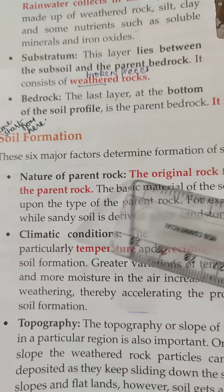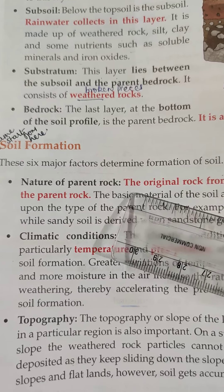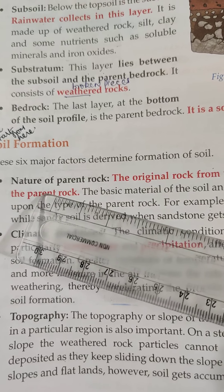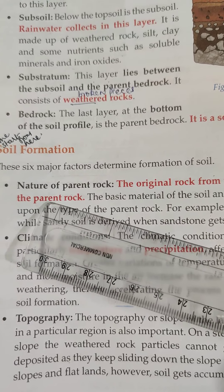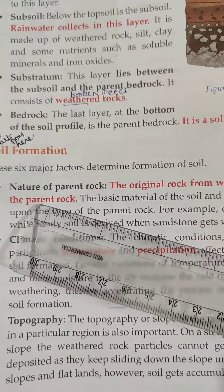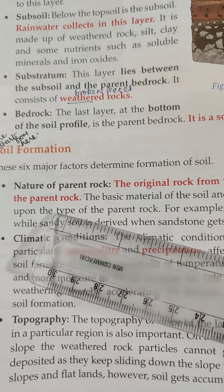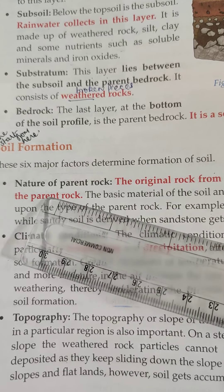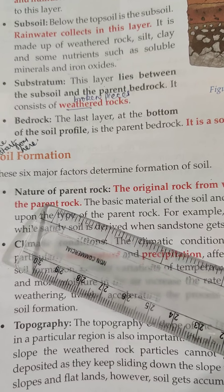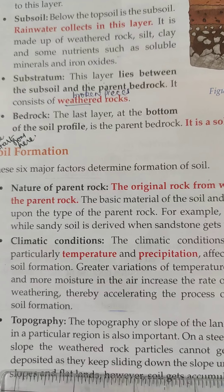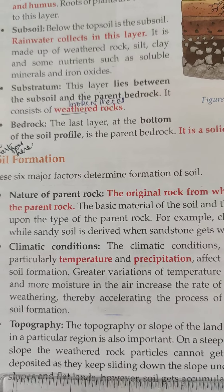The first factor is the nature of the parent rock. The original rock from which the soil is formed is called the parent rock. The basic material of the soil and the minerals present in it depend upon the parent rock. For example, clayey soil is derived from shale, and sandy soil is derived from sandstone.